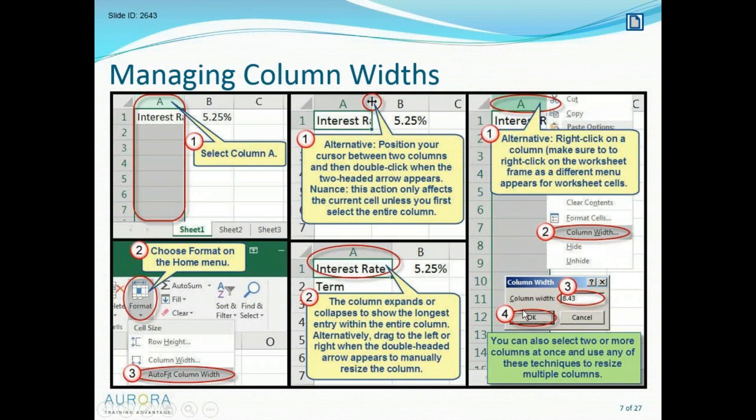Instead of selecting the column and using the menu command, you could put your cursor in the gap between two columns — such as between column A and column B. When you hover over that space, your cursor will change to a double-headed arrow. If you then double-click, Excel will automatically widen the entire column. That's actually the fastest and easiest way to widen columns.